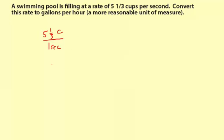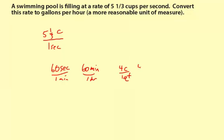Let me write down some of the unit conversions we're going to need. First, for time: we know there are 60 seconds per one minute, and we know there are 60 minutes per one hour — so that'll take us to hours. Then, for converting cups to gallons: there are four cups in a quart, and there are four quarts per one gallon. So that'll take us from cups to gallons.